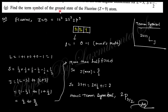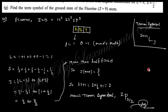Next question: find the term symbol for the ground state of fluorine. With 9 electrons, L=1 and S=1/2. Since the shell is more than half filled, J is maximum, that is J=3/2. With 2S+1=2 and L=1 (P), the term symbol is ²P₃/₂.